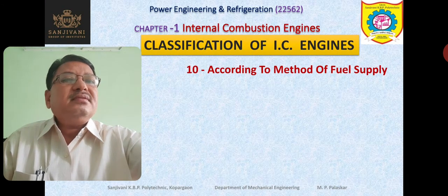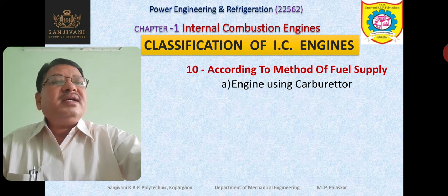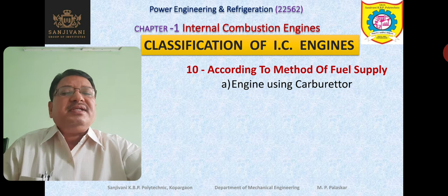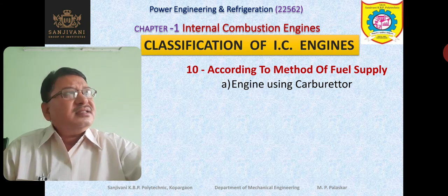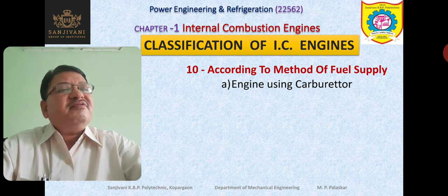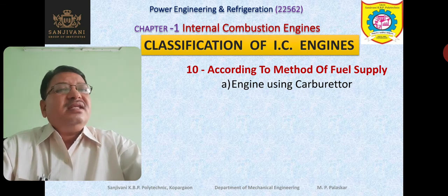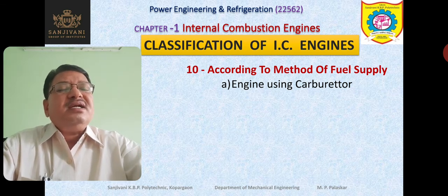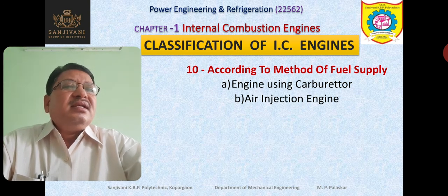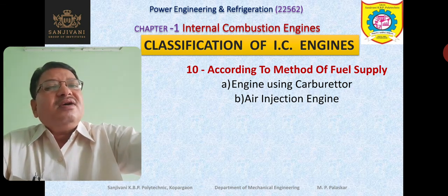Engines are classified according to the method of fuel supply. In some engines, we use carburetors. The carburetor mixes air and fuel in the required proportion, and this mixture — called charge — is supplied to the engine according to the power requirement. In compression ignition engines, only air is compressed at a very high compression ratio, and then fuel is injected directly.